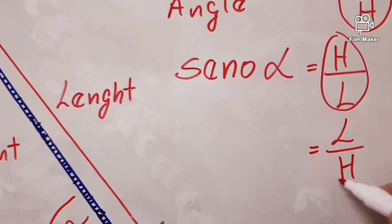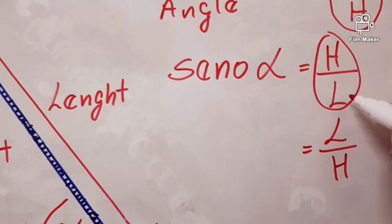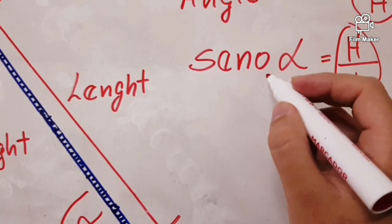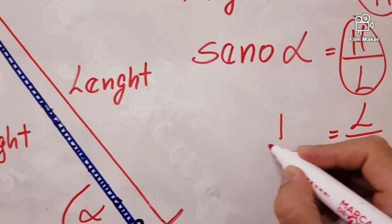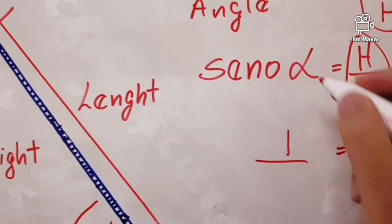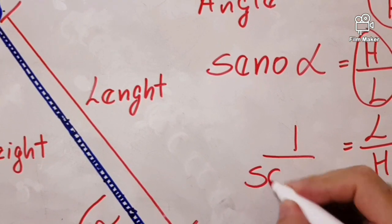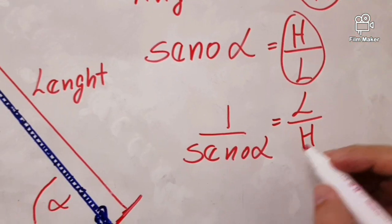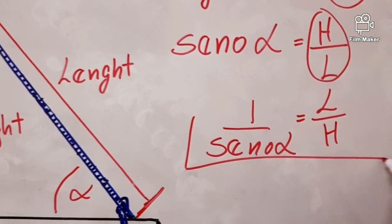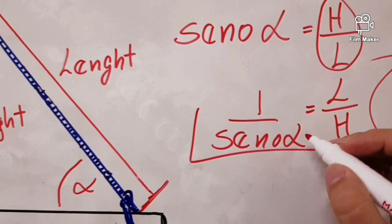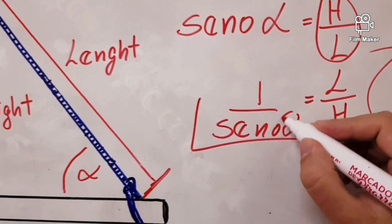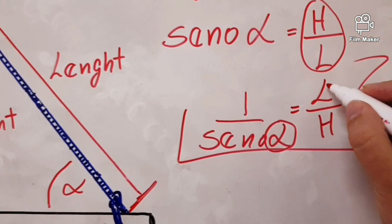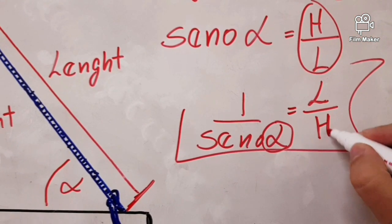But if we change the positions here, we must change the positions here too. It was up, now it goes below. So it means that we have this angle, just this angle, we can know what is the factor of angle.